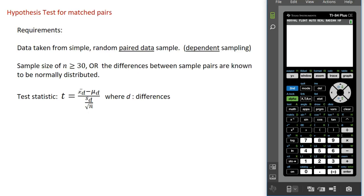The hypothesis test for matched pairs data works a little bit different than the other hypothesis tests we've studied. In this test, we end up with two groups of data, and from those two groups of data, we actually make a third set of data that is the set of data we actually use in the hypothesis test. Our data should be taken from simple random paired sample data. We end up with two groups, say group one and group two, and each member of group one is matched up in some way to each member in group two.